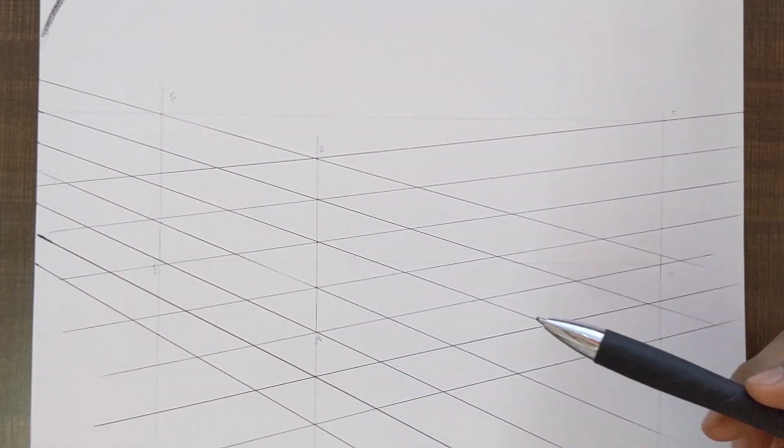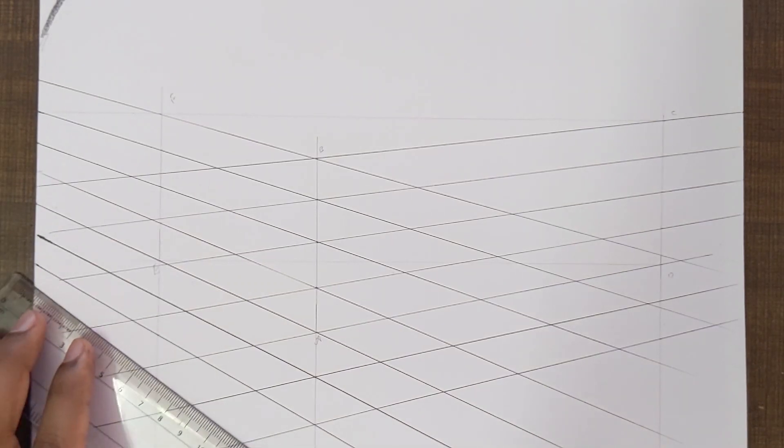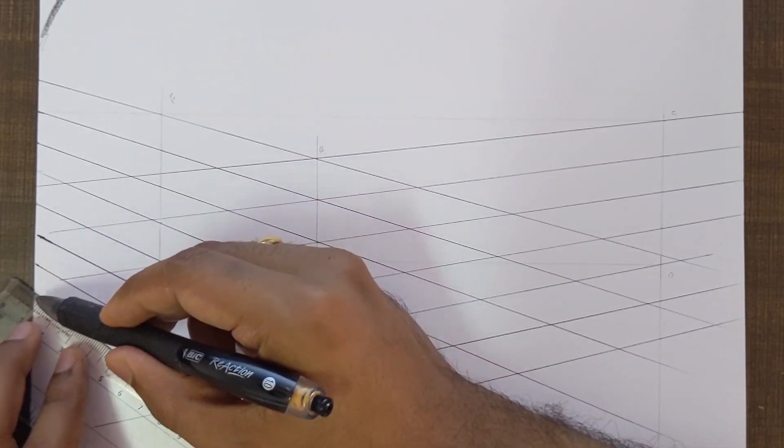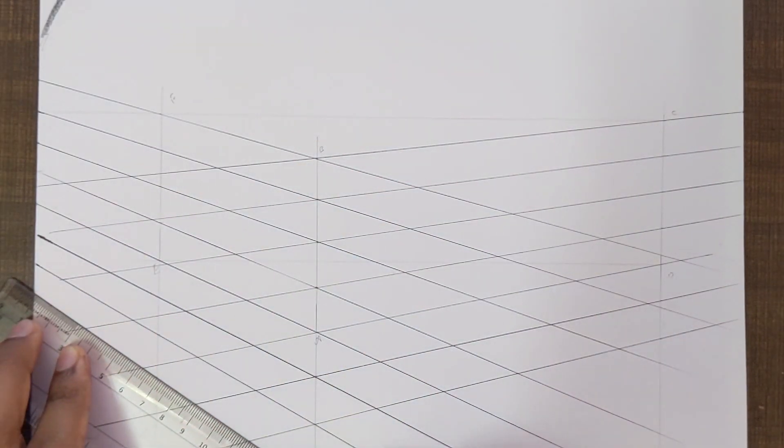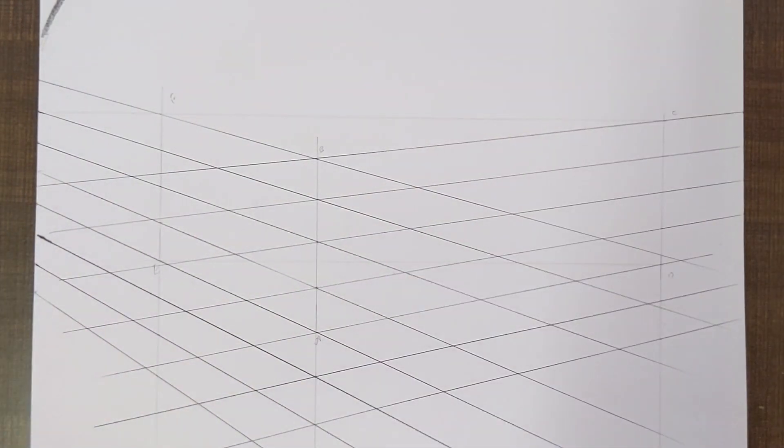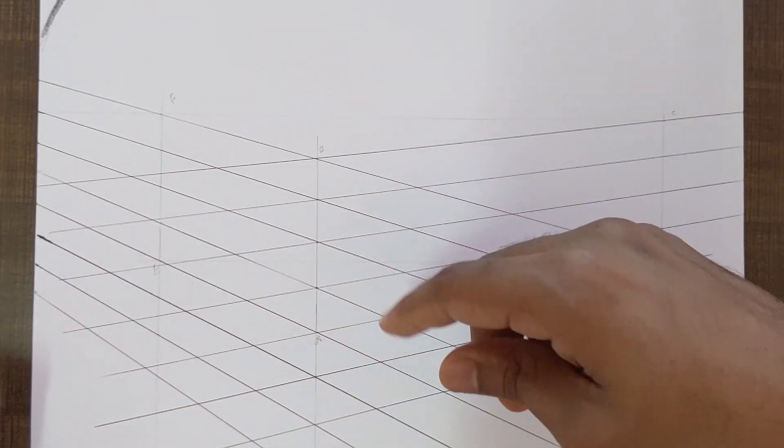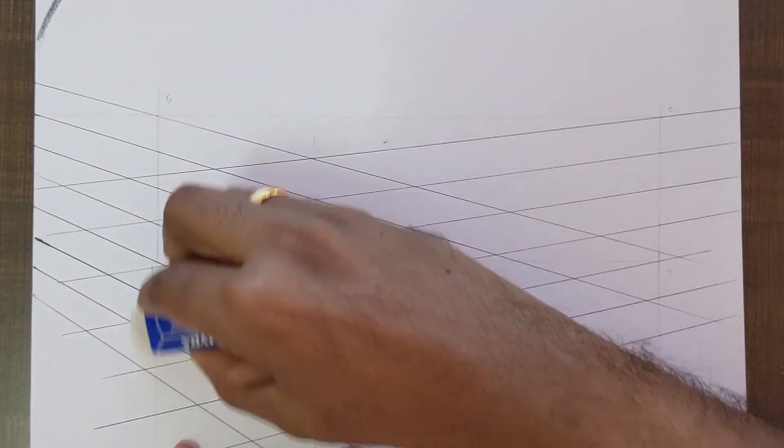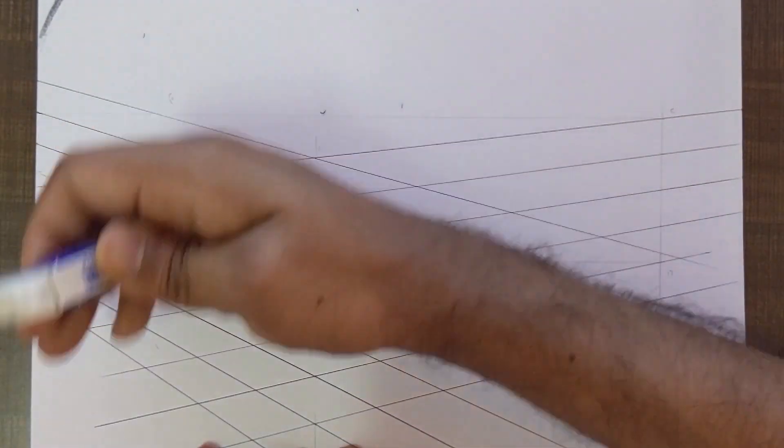If you want to extend this further or divide it further, one easy way is to maintain equal amounts of distance from here to here. I think that's it. We have a proper grid, and if you erase all these construction lines, we have a perfect grid in two-point perspective.